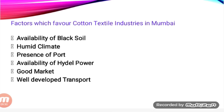The first jute mill was established by George Aukland in 1854 at Rishra near Kolkata. India stands first in the production of raw jute and jute goods, next to Bangladesh. Jute products include gunny bags, canvas, pack sheets, jute web, carpets, cottage goods, hessian, and twines. It is also used in plastic furniture.